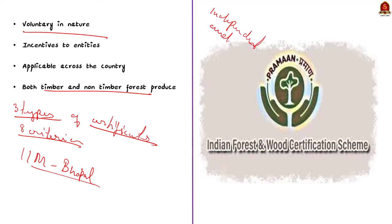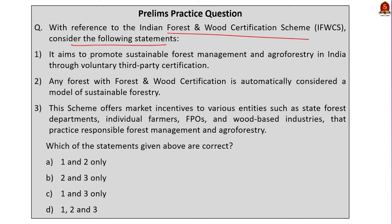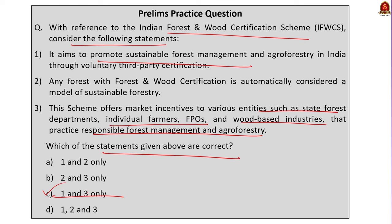Answering the question on the Indian Forest and Wood Certification Scheme: Statements 1 and 3 are correct, while statement 2 is incorrect. Having certification does not automatically make a forest a model of sustainable forestry. While certification is an important indicator of responsible management, it is not the only criterion for sustainability — other factors such as forest biodiversity, the well-being of local communities, and the long-term health of the ecosystem must also be considered. The correct answer is option C — 1 and 3 only.